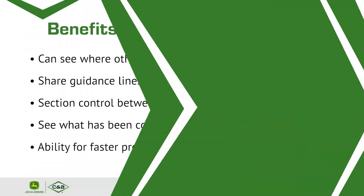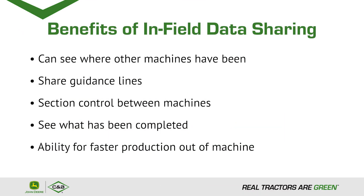The benefits of infield data sharing is you can see where the other machine has been, whether it be harvest, planting, tillage, or spraying when you have multiple machines in the field. You have the opportunity to see what has been completed and what has not. It also gives the ability for faster production, getting machines to where they need to be so we don't forget any portions of the field.